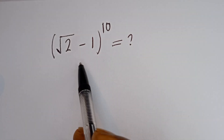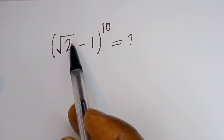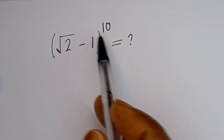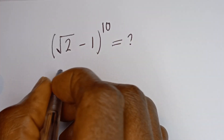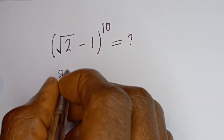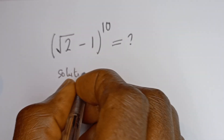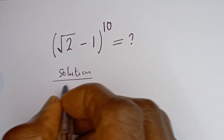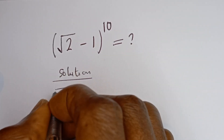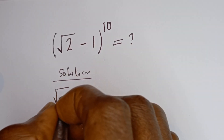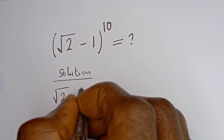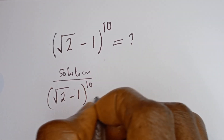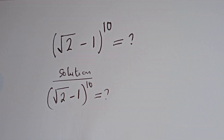Hello. How to simplify this math problem without using a calculator: square root of 2 minus 1 to the power of 10. We have the given question: square root of 2 minus 1 to the power of 10.